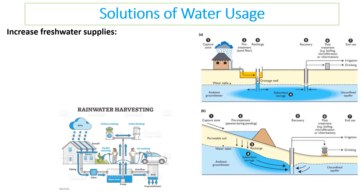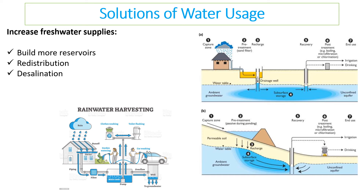Since human populations aren't going to decrease anytime soon, we need solutions for water usage. First, we can increase supplies of fresh water. We can store more water when it does rain by building more reservoirs — something the UK is actively considering. Other approaches include redistribution of water, desalination of seawater to remove salt and make it drinkable, and rainwater harvesting systems where rainwater collected from houses can be used for toilets and other uses that don't require completely clean water.